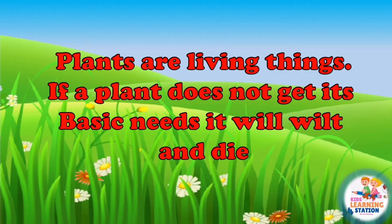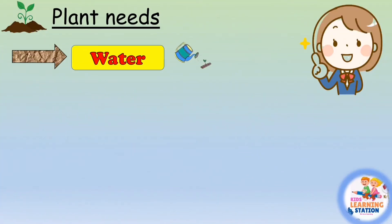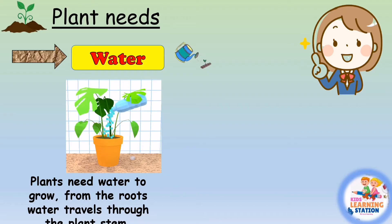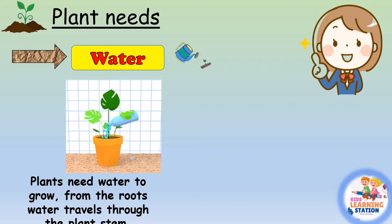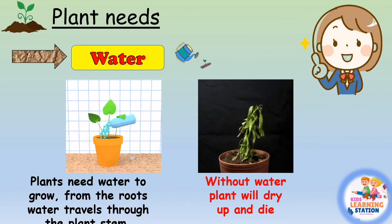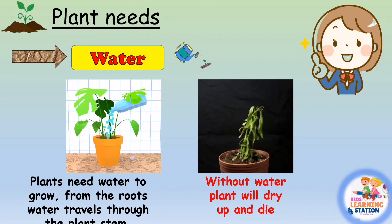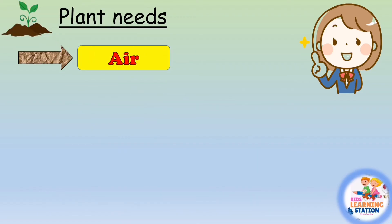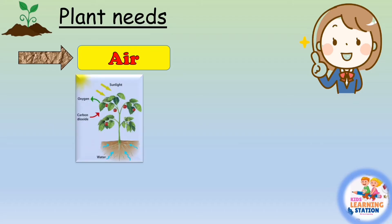Plants are living things like us. If a plant does not get its basic needs, it will wilt and die. Water: plants need water to grow. Water goes from the roots and travels through the plant stem. If they get enough water they will be healthy. Without water, the plant will dry out, wilt, or die.